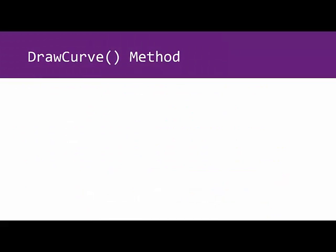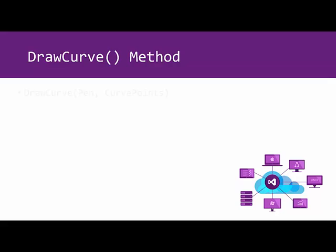Now, let's start by defining the DrawCurve method. The DrawCurve method has a syntax where it only has two parameters, the pen and the curve points, which would be the array.